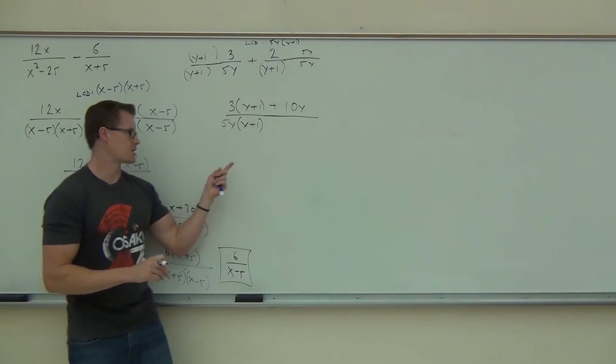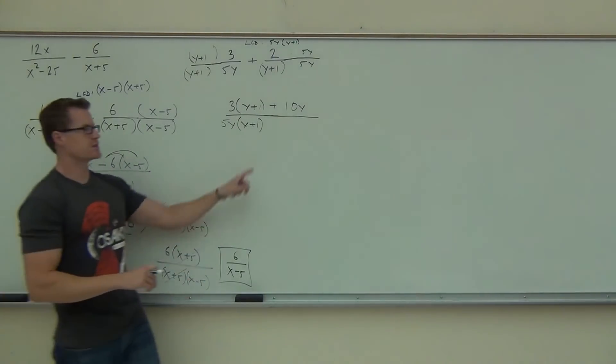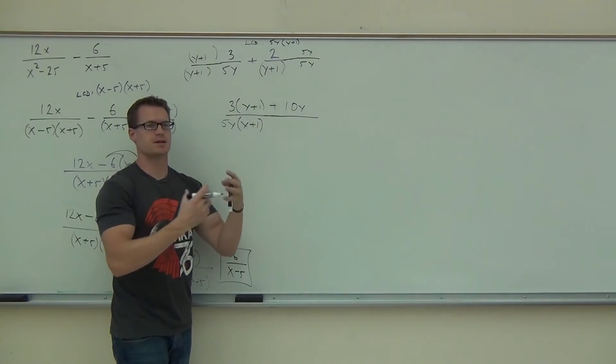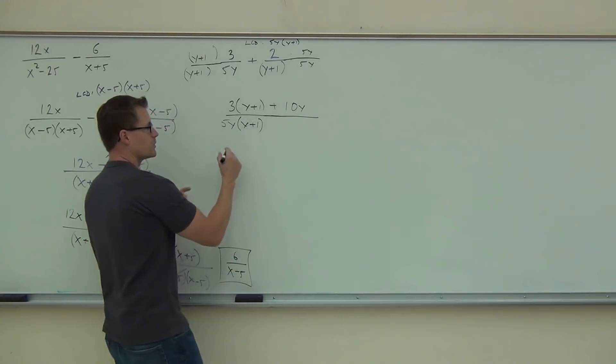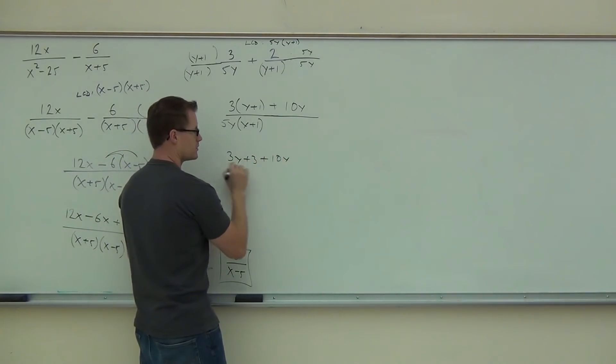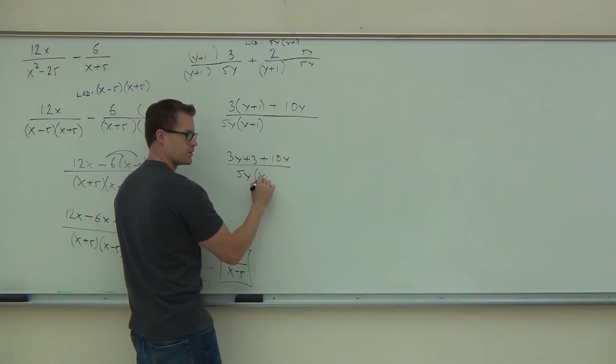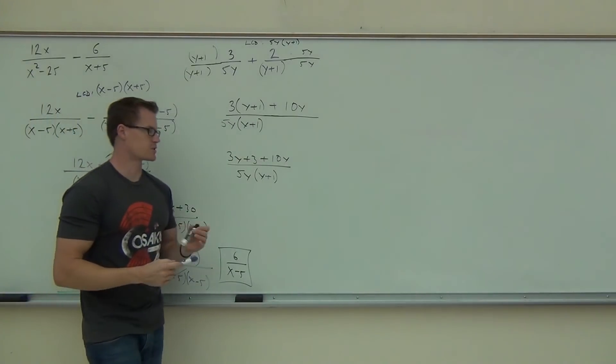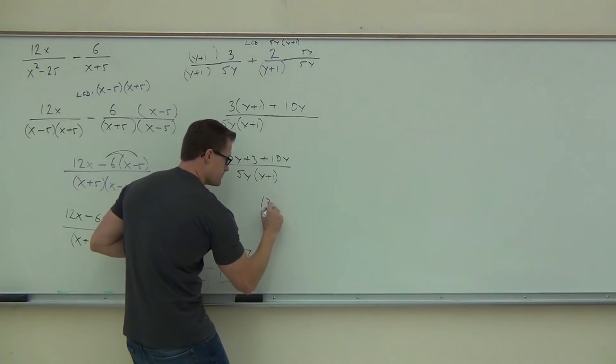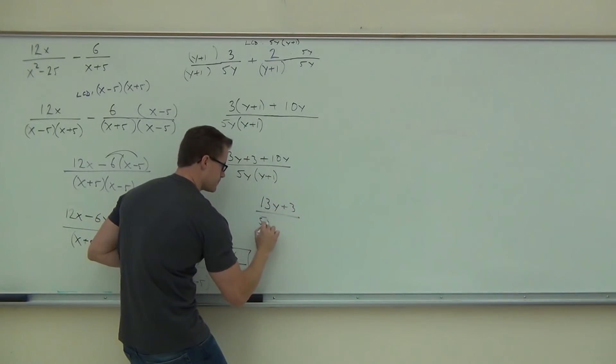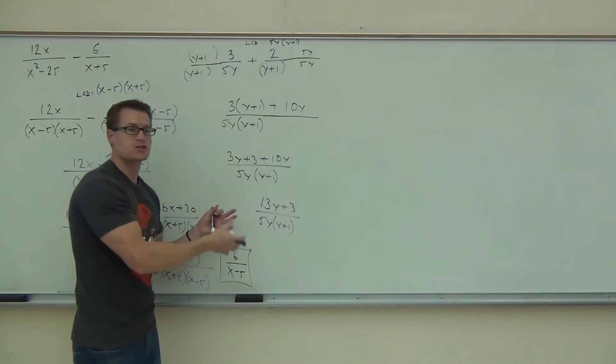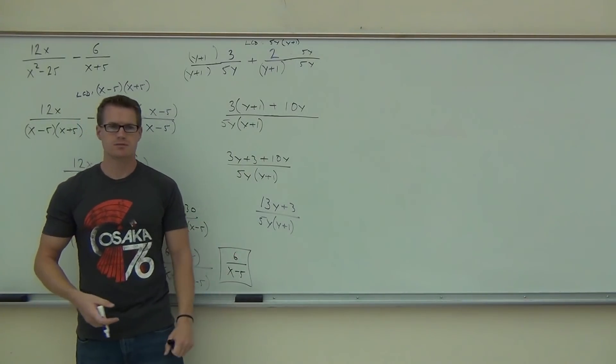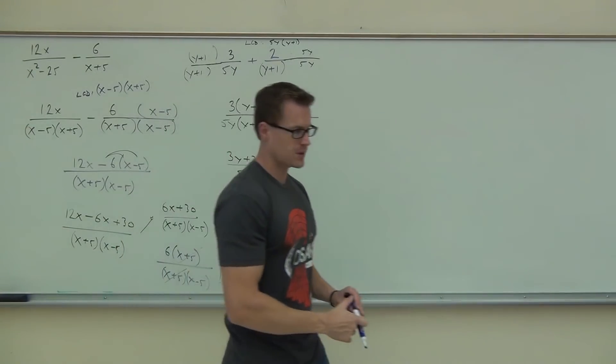Definitely not. That's the same question as this. Can I cross out the X minus 5s? No. It's connected by that plus. I can't do anything about it. One thing I can do is distribute the numerator and combine like terms. And then see if I can factor. So we will do that. We'll get 3y plus 3 plus 10y over 5y times y plus 1. When we combine some like terms, we're going to get 13y plus 3. Now, 13y plus 3, can you factor that? No. Then that's your answer. That's all you can do with it. If you can't factor the numerator after you combine like terms, you're done. Don't distribute the denominator. Don't start canceling out y's. You're done on that problem.